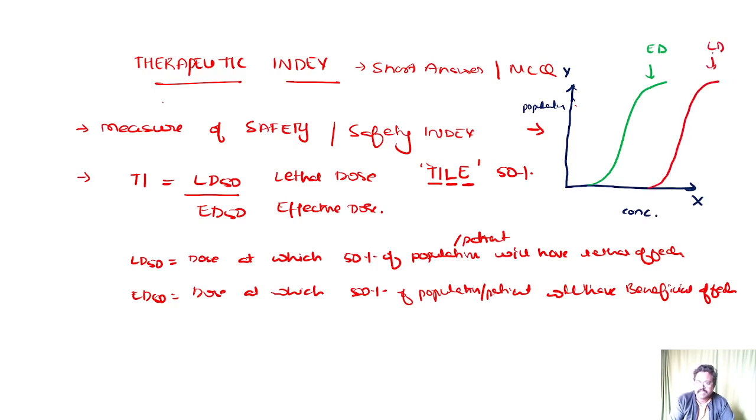If this is the 50% of the population, and if you plot a marking here at this 50% where it is intersecting, this will be your effective dose 50, and this will be your lethal dose 50. So this difference or the window or the gap is the therapeutic index, or you can say it is a therapeutic window.